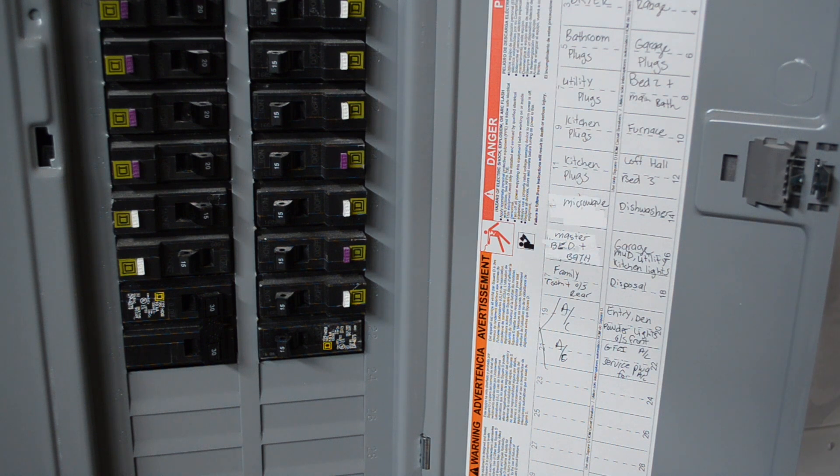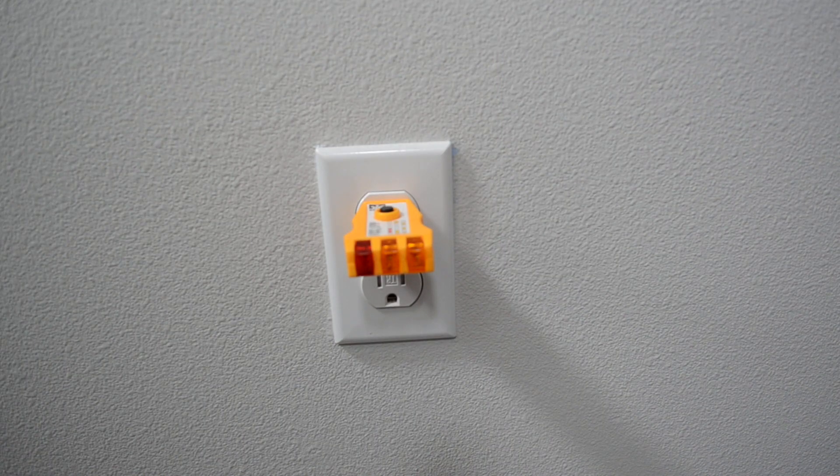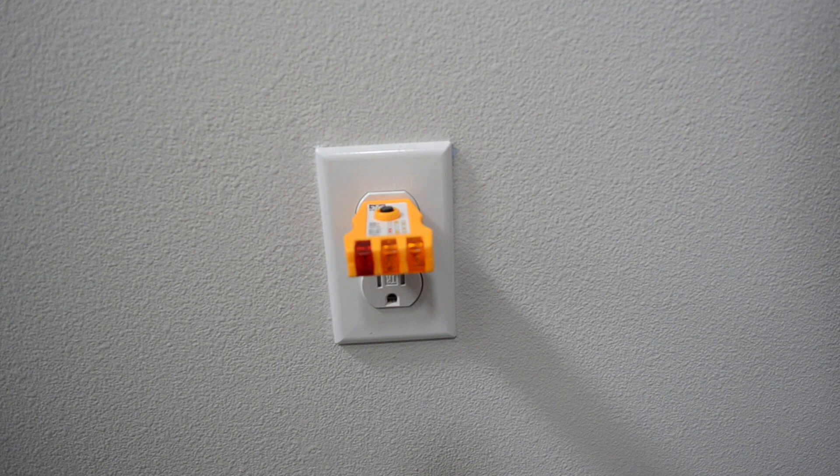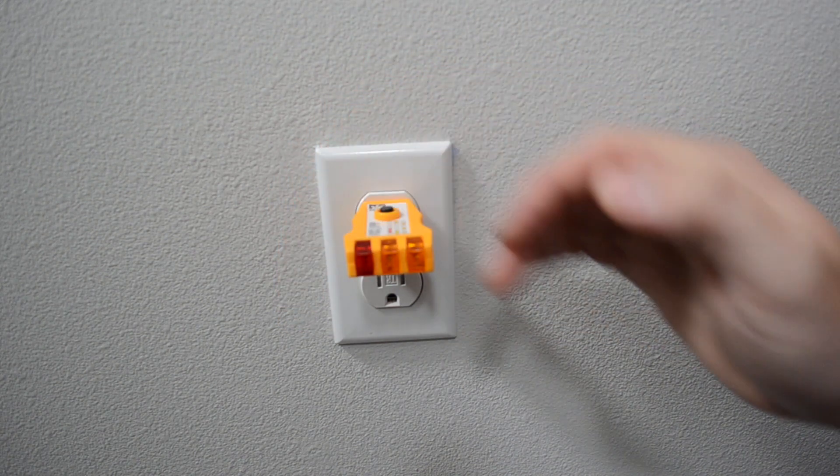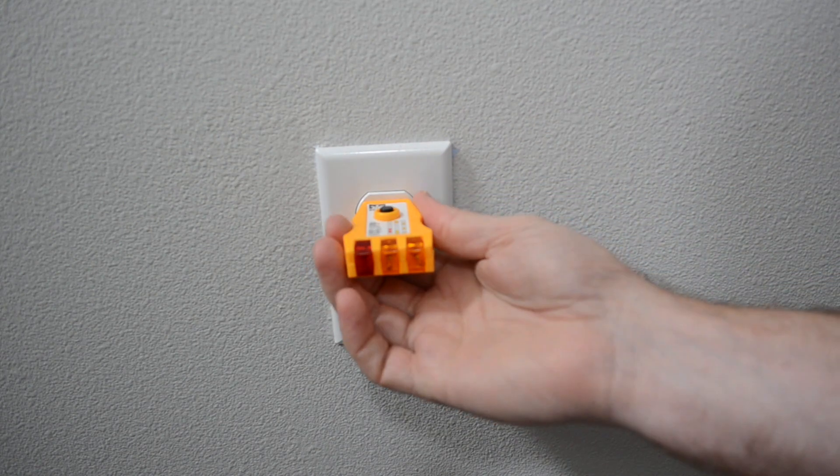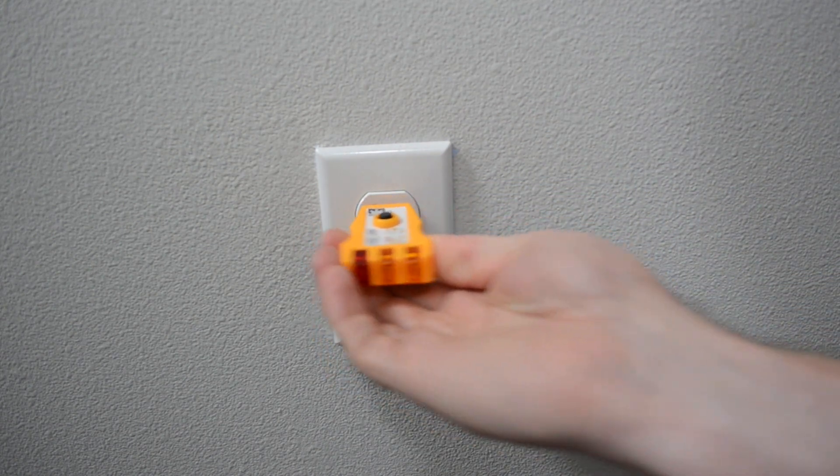Once that is off then we go back into the house and make sure that the lights went off on our plug tester. We are back in the living room now. And as you can see the lights are off on our plug tester, which means there is no electricity going to this outlet. It is now more safe to work on.